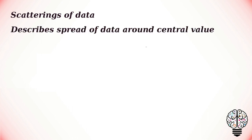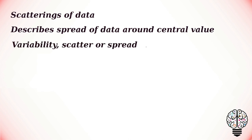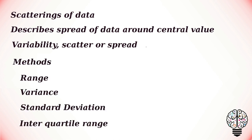As the name suggests, the measure of dispersion shows the scatterings of the data. It is used to describe the spread of data around a central value. Dispersion is also called variability, scatter, or spread. Common types of measures of dispersion are the range, variance, standard deviation, and interquartile range.